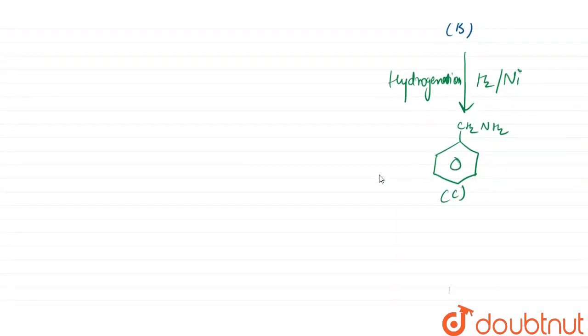Now with this product C on reaction with HNO2, gives the product which is CH2OH on benzene ring. So the product will be like this, CH2OH. This is our product D.